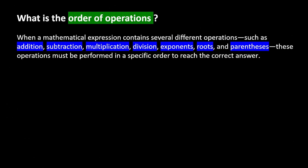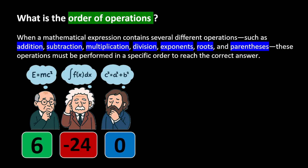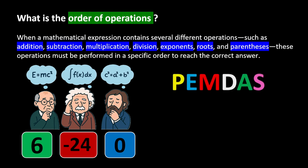When a mathematical expression contains several different operations — such as addition, subtraction, multiplication, division, exponents, roots, and parentheses — these operations must be performed in a specific order to reach the correct answer. Mathematicians, in order to prevent disorder in mathematics, agreed on a universal rule called the correct order of operations. This rule is known by a short and simple expression called PEMDAS.